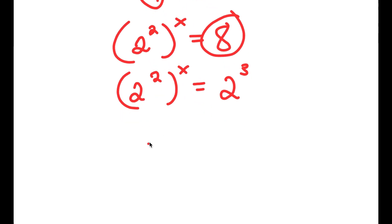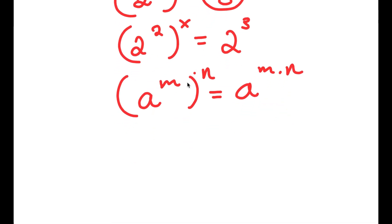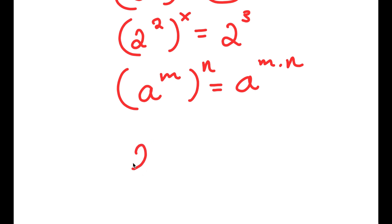If I have something in the form a to the power of m, to the power of n, this is equal to a to the power of m times n. So 2 to the power of 2, to the power of x, equals 2 to the power of 2 times x, which is simply 2 to the power of 2x. And now this is equal to 2 to the power of 3.